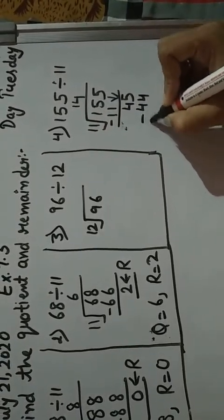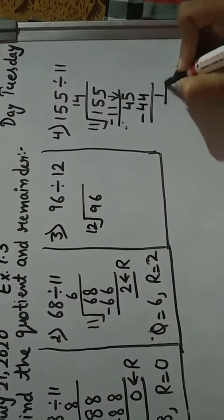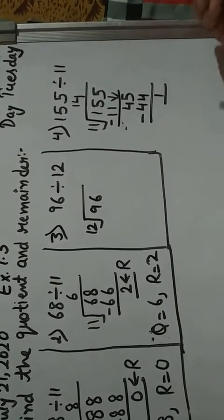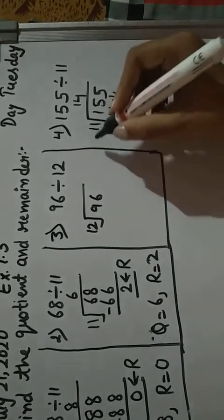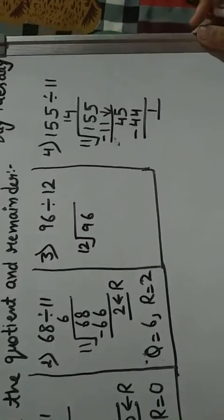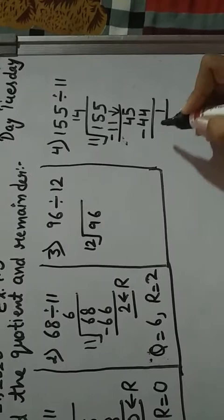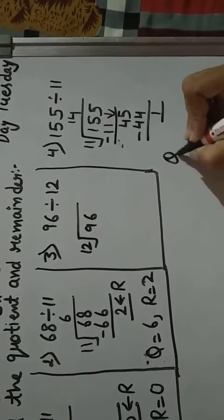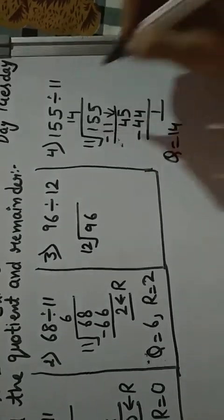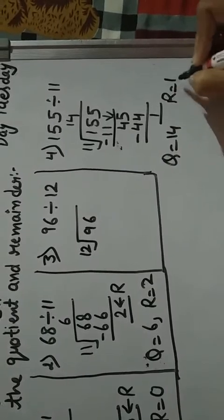So 5 minus 4 is 1. Then here is no number and it is less than divisor. So quotient, how much is your quotient? 14. And remainder, how much? 1.